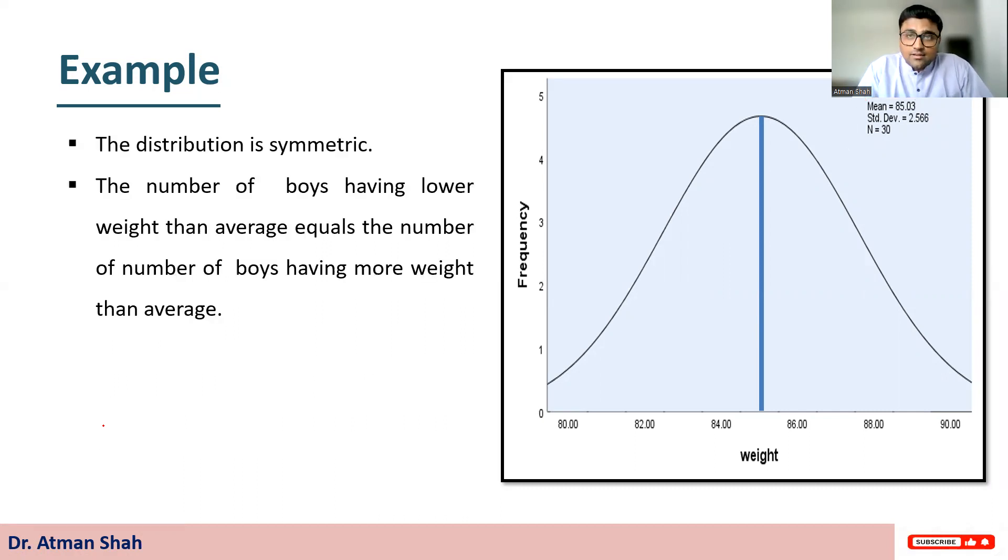So the distribution is symmetric. The number of boys having lower weight than average equals the number of boys having more weight than average. So we have equal number of observations on both sides. This is first side and this is second side. We have equal number of observations on both sides of the mean.